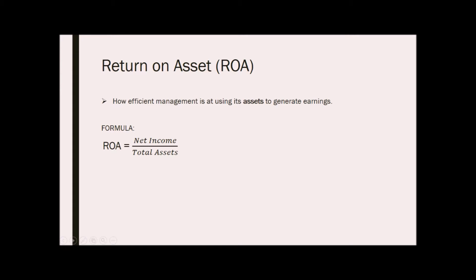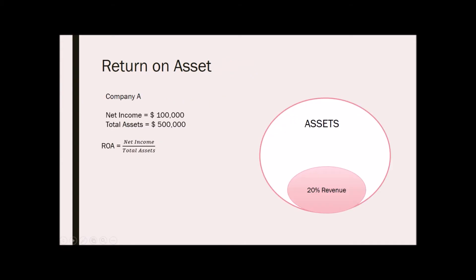For example, Company A has a net income of $100,000 and total assets of $500,000. By dividing these two, we get an ROA of 20%. This means that the company was able to convert 20% of its investment into profit. The higher the ROA number, the better, because the company is earning more money on lesser investments.